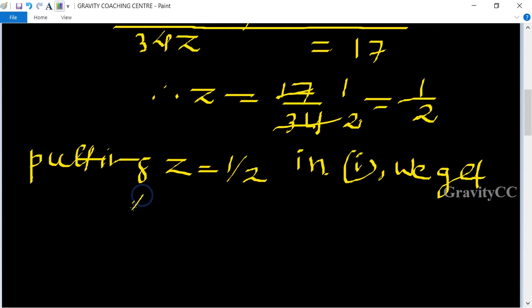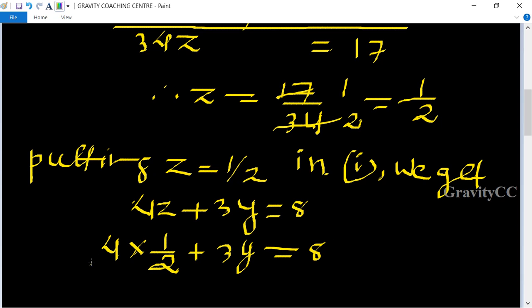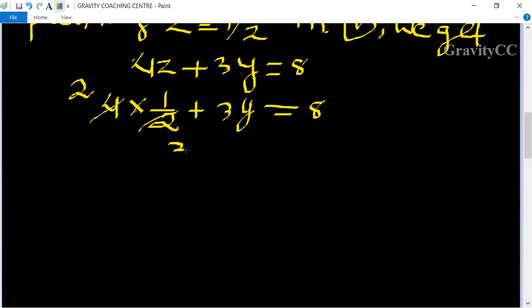4z + 3y = 8. Now we put the value of z = 1/2. So 4(1/2) + 3y = 8, which gives 2 + 3y = 8. Therefore 3y = 8 - 2, so 3y = 6 and y = 2.